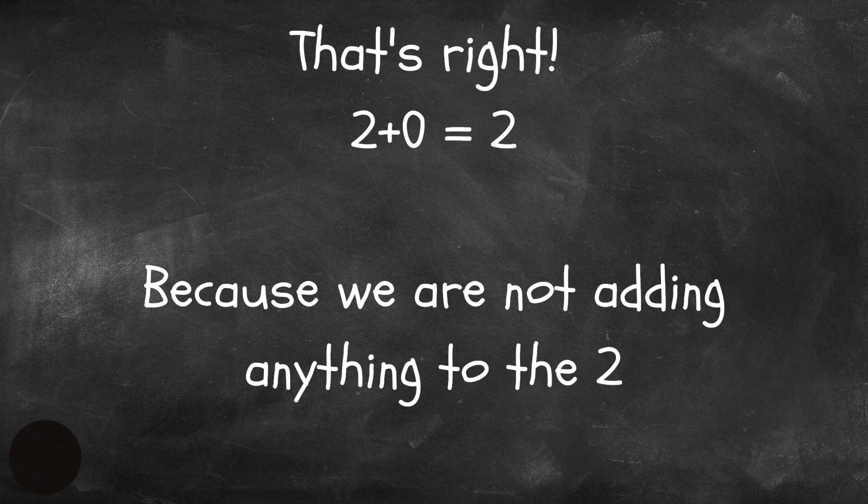That's right, two plus zero equals two, because we are not adding anything to the two.